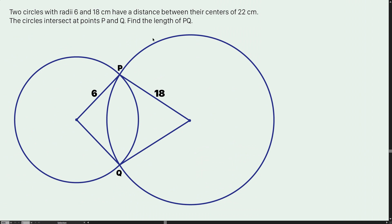Say hi from Challenge Math. This is the problem for today. Two circles with radii 6 and 18 cm have a distance between their centers of 22 cm. The circles intersect at points P and Q. Find the length of PQ.